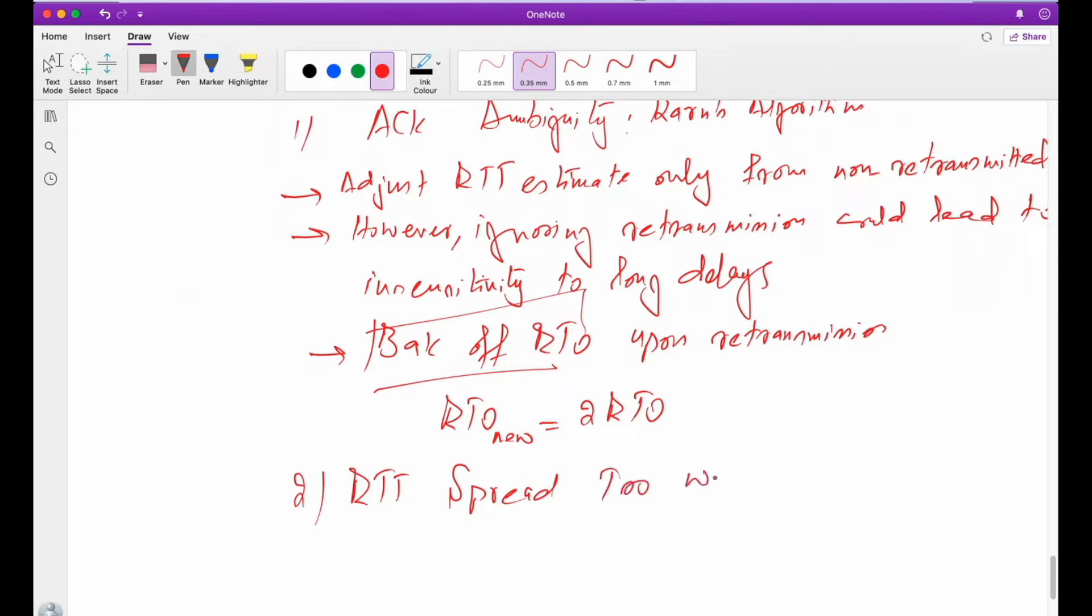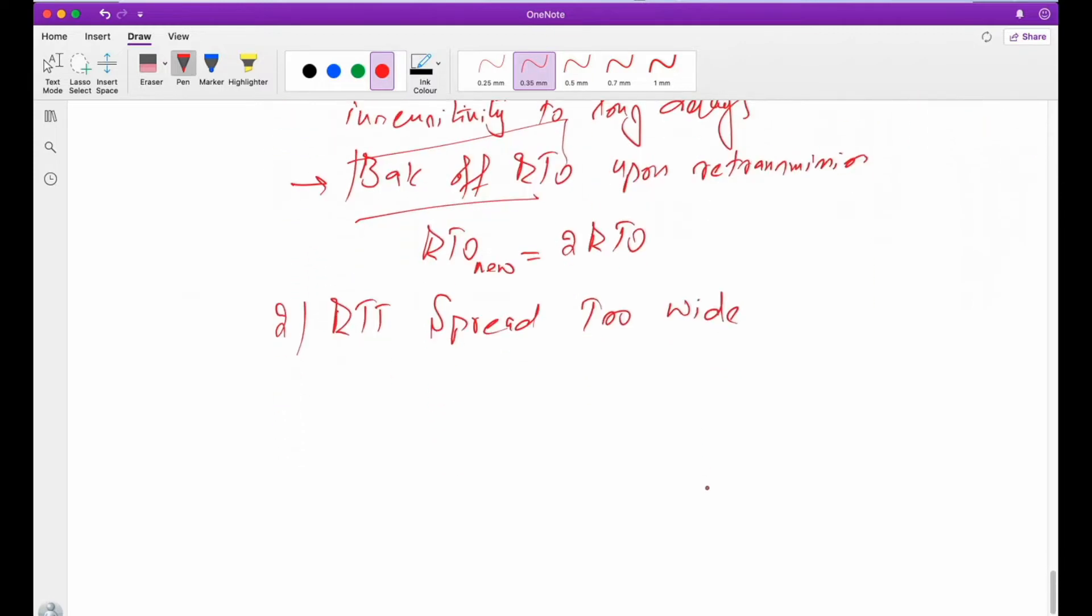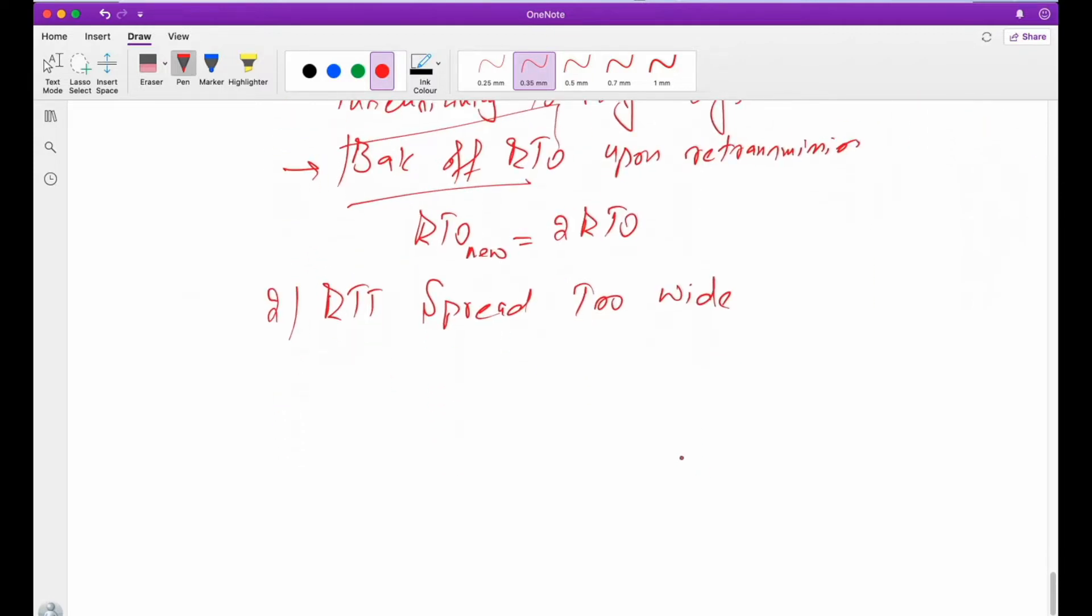This means what? This means RTT is not considering variance into concentration, deviation into concentration, right? Because RTT estimate is computed using exponentially weighted moving average.